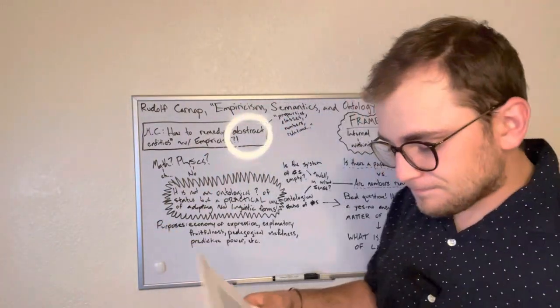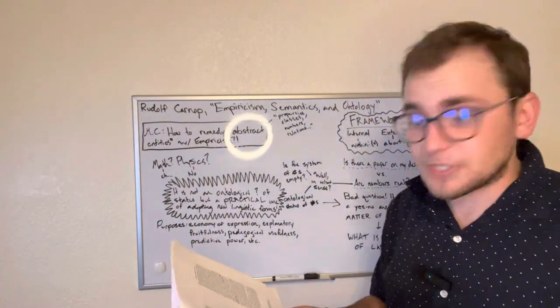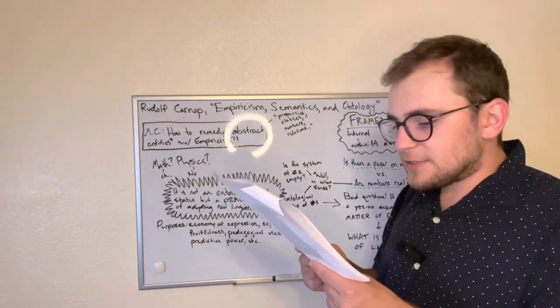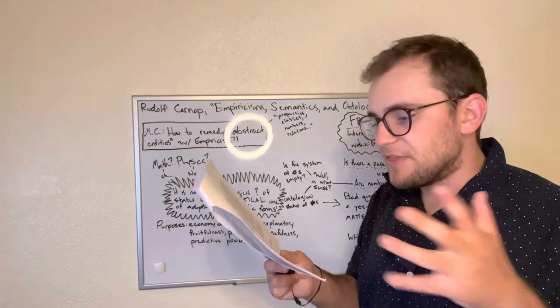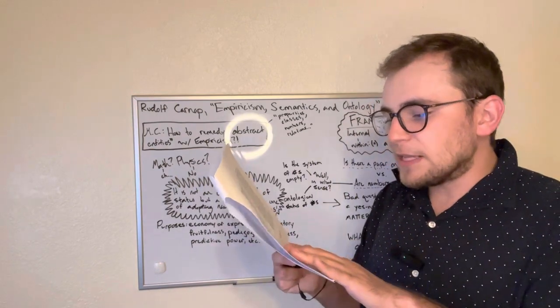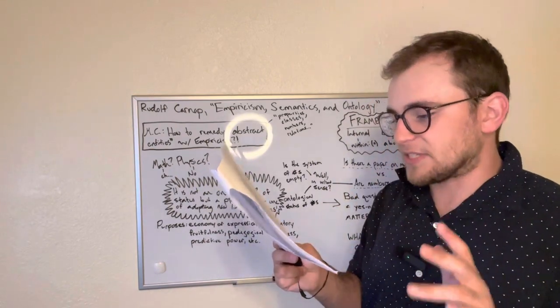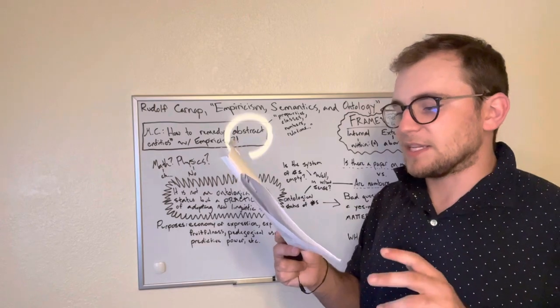So, he says in the work, on page 24 of the JSTOR edition, there is an in, such that in is a number, or he put it earlier, there are numbers. This statement follows from the analytic statement, five is a number, and is therefore itself analytic.